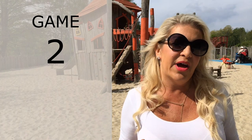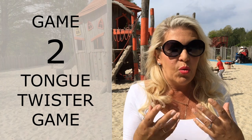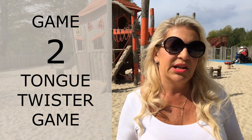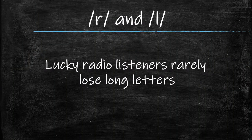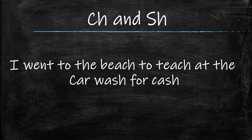Another great pronunciation game — just as easy to do at home or in class — is the Tongue Twister Game. This works well as a warmer and helps students pronounce difficult sounds in English. You write on the board some tongue twisters containing sounds your students find particularly difficult. For example, for R and L: 'Lucky radio listeners rarely lose long letters.' For F and TH: 'Tomorrow is the third Thursday of this month.' Or for CH and SH: 'I went to the beach to teach at the car wash for cash.'